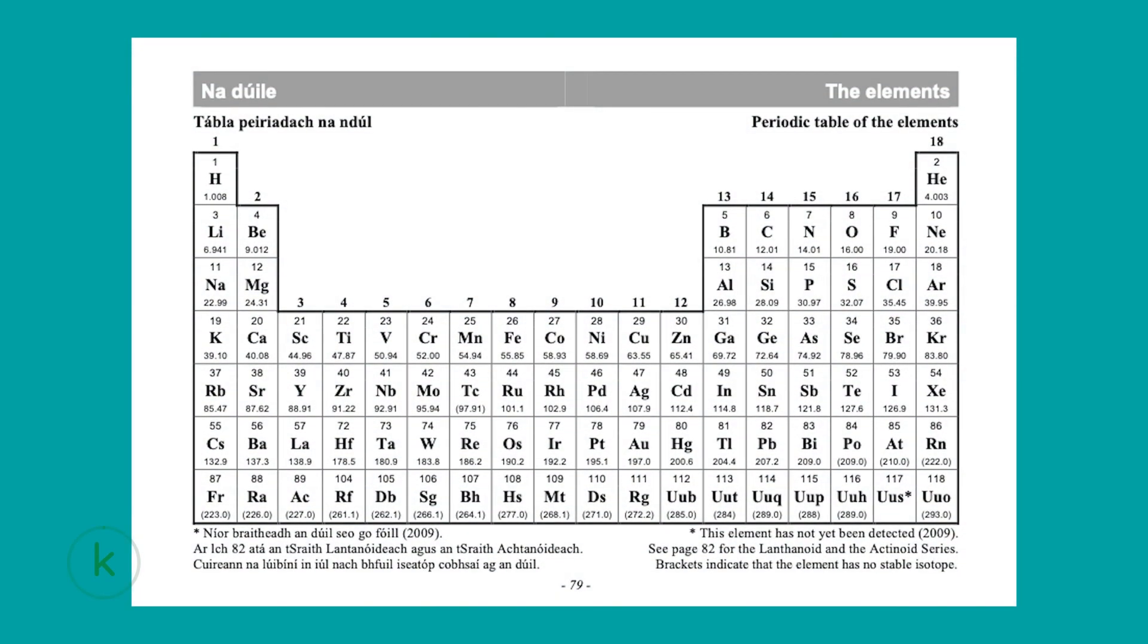Before moving on to part k I'd like to draw your attention to page 79 of the Formula and Tables book where we are looking at the periodic table of elements. The elements we will look at today are carbon and nitrogen.